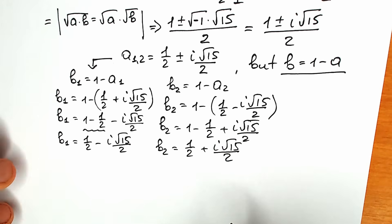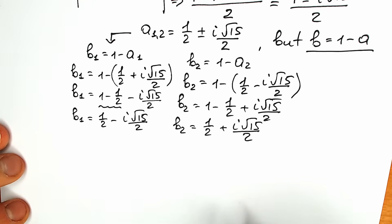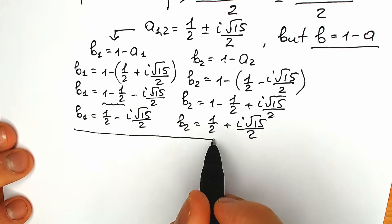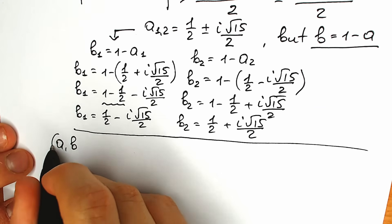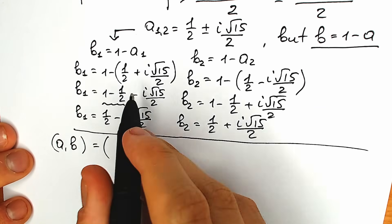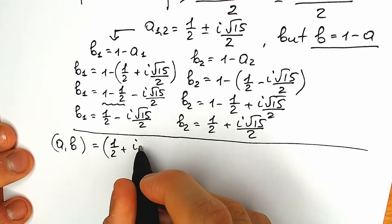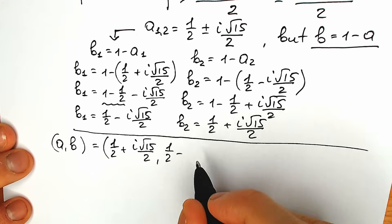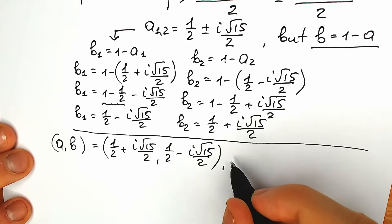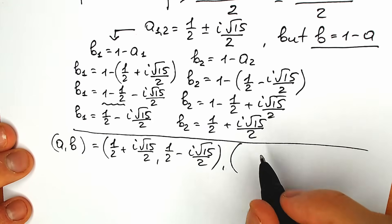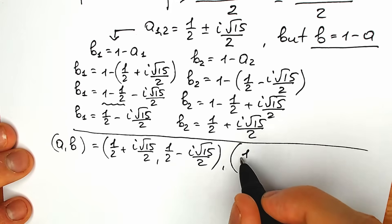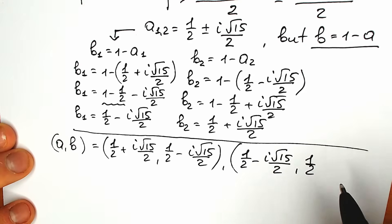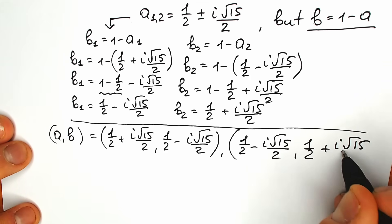As I said, we have symmetrical roots. Our final answer: the pairs (a, b) are: first pair — a₁ = one-half plus i√15/2 and b₁ = one-half minus i√15/2; second pair — a₂ = one-half minus i√15/2 and b₂ = one-half plus i√15/2.